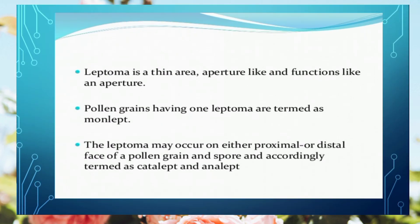Leptoma is a thin area, similar to a puncture in structure and function. If one leptoma is present — one thin space — we use the term 'leptum'. Leptoma can occur on either the proximal or distal face of pollen and spore, and accordingly termed as catalypt or analypt. The prefix 'kata' indicates proximal and 'ana' indicates distal end, as we saw in the position classification.